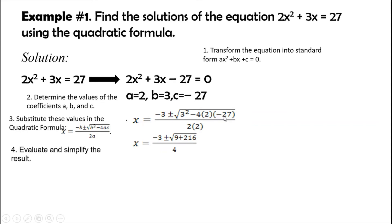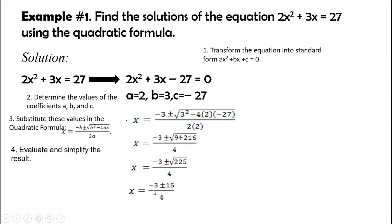Continuing the simplification: 9 plus 216 is 225. The rest we copy, then simplify. The square root of 225 is 15. So we arrive at x equals negative 3 plus or minus 15, divided by 4.